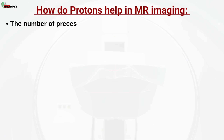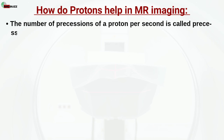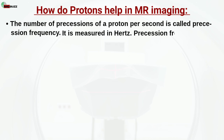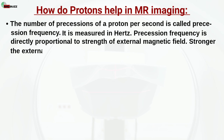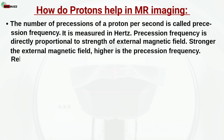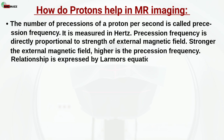This movement of the axis of rotation of a proton is called precession. The number of precessions of a proton per second is called precession frequency, measured in Hertz. Precession frequency is directly proportional to the strength of the external magnetic field — stronger the external magnetic field, higher is the precession frequency. This relationship is expressed by Larmor's equation.